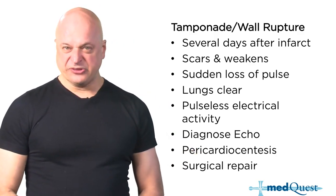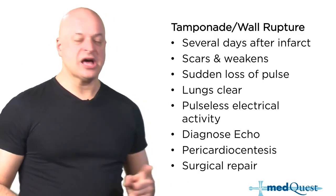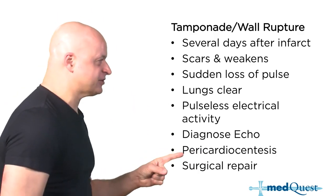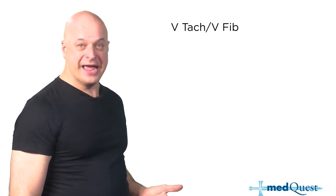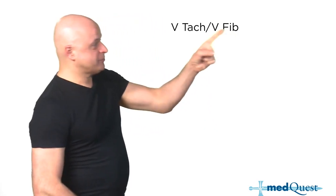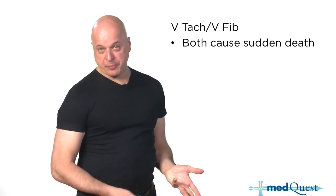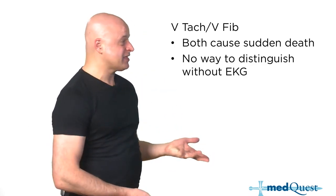Wall rupture: most people die. If you can keep them alive with pericardiocentesis briefly to get them to operative repair, that's the goal. VTAC and VFib without a pulse cannot be distinguished. VTAC can have a pulse and even be hemodynamically stable, but VTAC can also cause loss of pulse just like VFib.